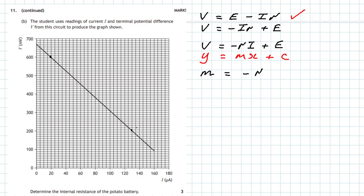If I find the gradient of it, it will be equal to minus the value of the internal resistance. So to do that, I have to select two well-spaced points, and I've done that on the graph. I've selected one up here which crosses a line - point A - with coordinates 20 microamps and 600 millivolts. I've selected point B down here to be 130 microamps and 200 millivolts. So there's my two points carefully selected because they cross the lines.